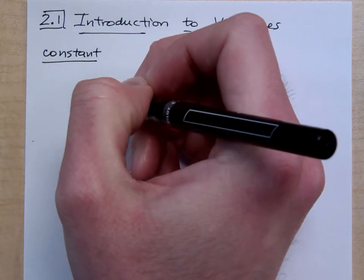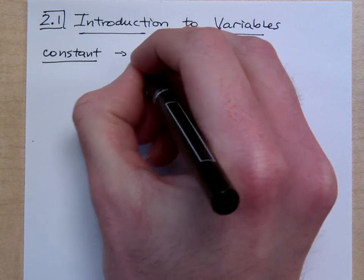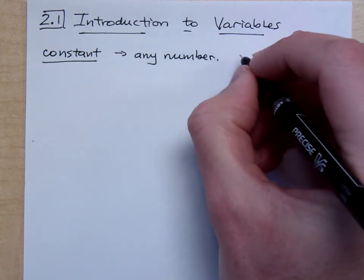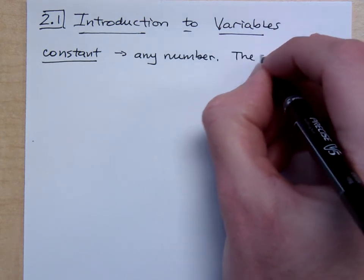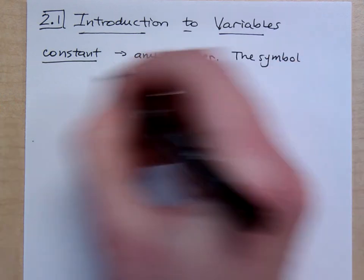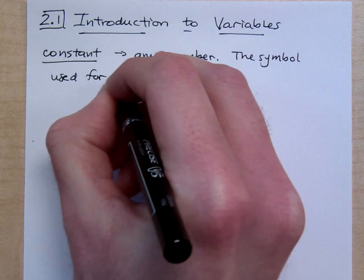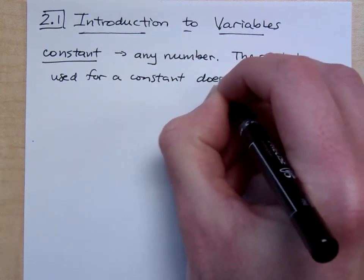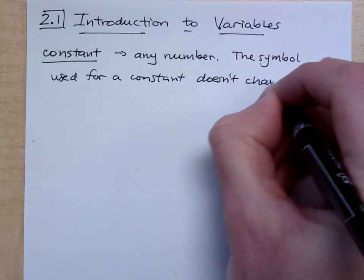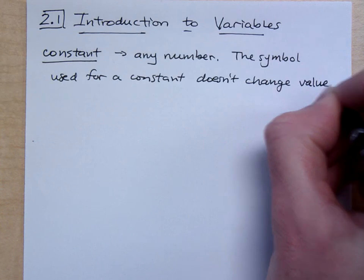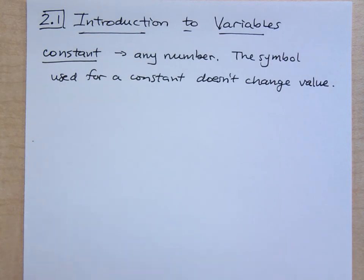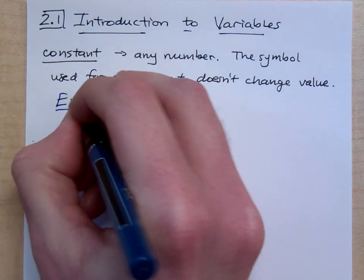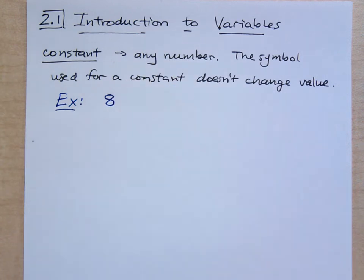These are the guys we've been dealing with this whole time. A constant is just any number. When we're talking about a constant, the symbol used for the constant doesn't change value. What this means is that when I write a constant — if I were to write the constant 8 — 8 is a constant.